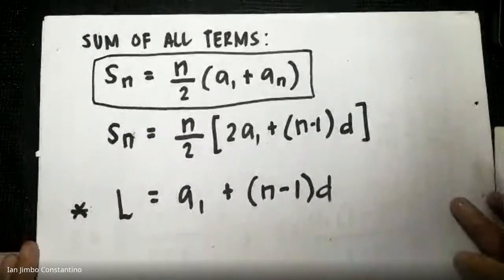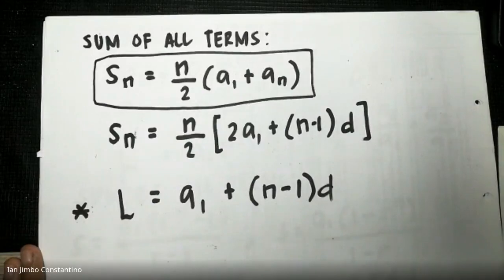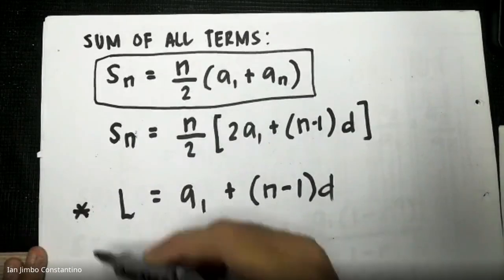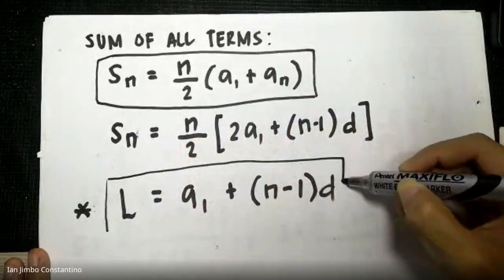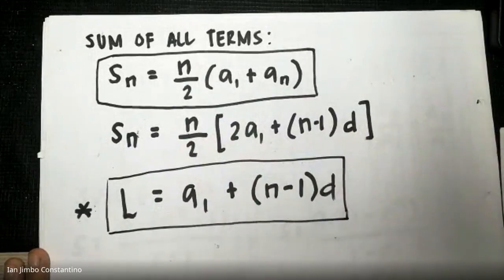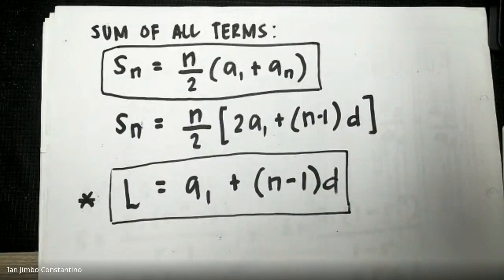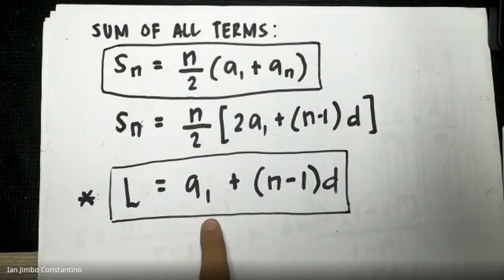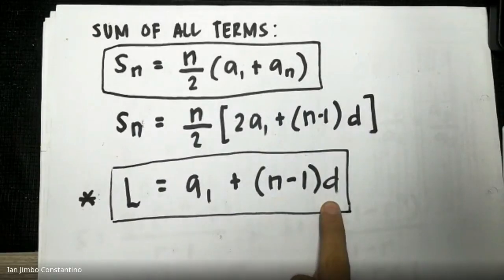It is easier to remember if you have a mnemonic. For arithmetic progression, the mnemonic is LANID — the Last term, the first term (A1), the Number of terms, and the common Difference. This helps you remember the key variables easily.